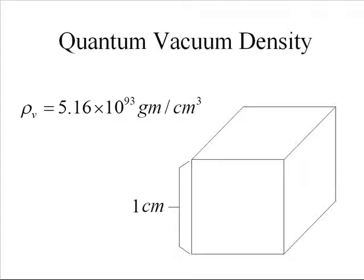It begins with the quantum vacuum density, which is a measured 5.16 times 10 to the 93rd grams per cubic centimeter.